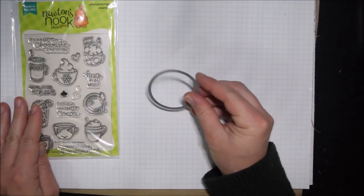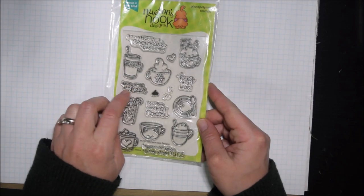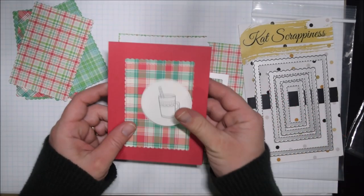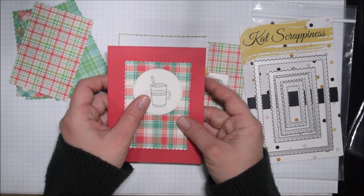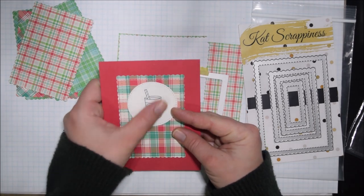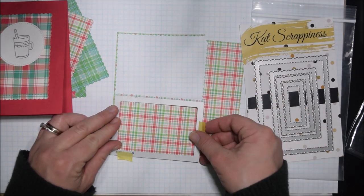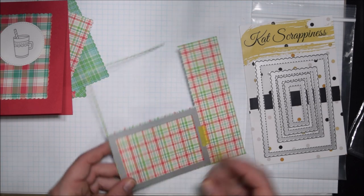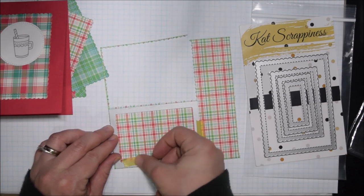I wanted to combine these two ideas, so I picked out the Newton's Nook Designs Cup of Cocoa stamp set and a stitched circle that I could fit over all the images. There are eight different cups in the stamp set, so I cut eight stitched circles and stamped one of each cup inside.